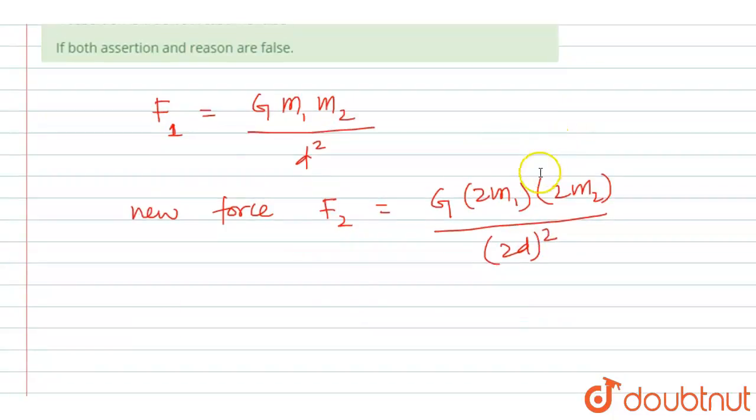This will be the new force because distance is double as well as mass is double. So, we got 2 into 2 is 4 in the numerator as well as 2 square which is 4 in the numerator. So, we are simply getting G M1 M2 upon D square again.